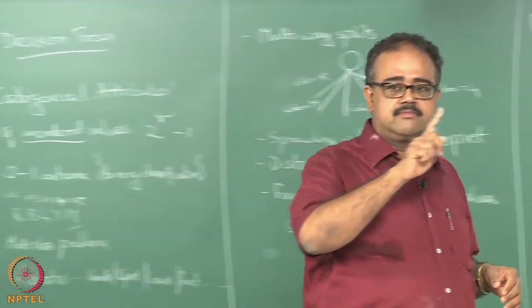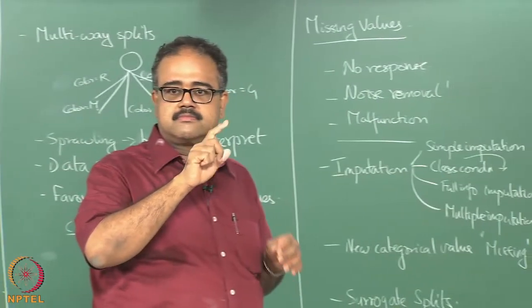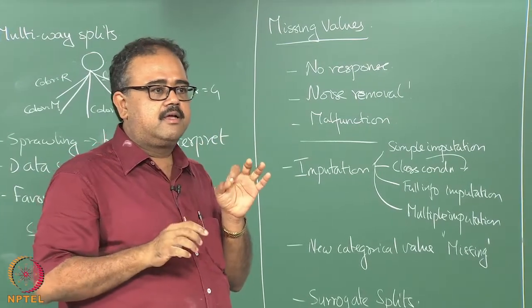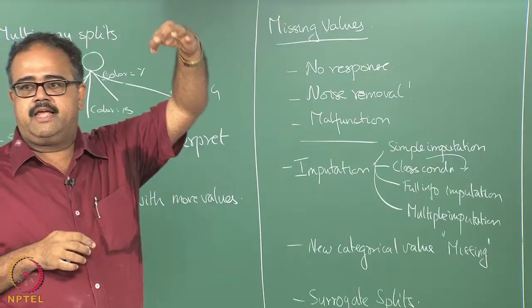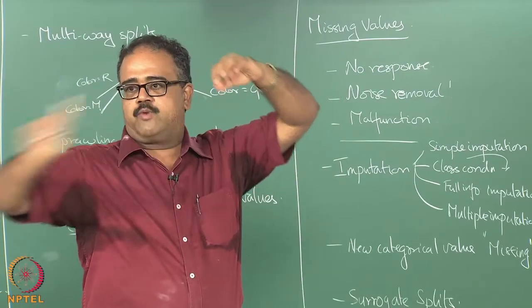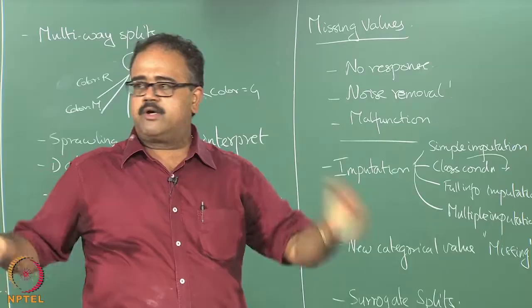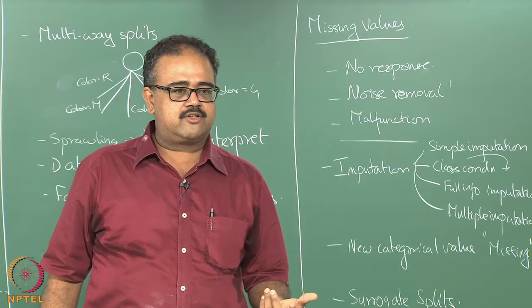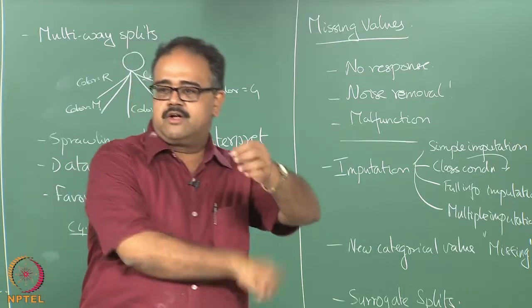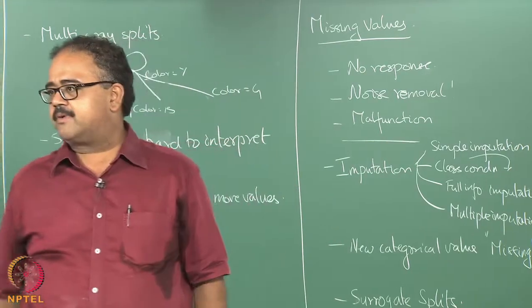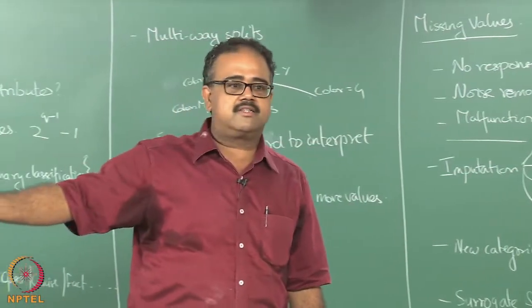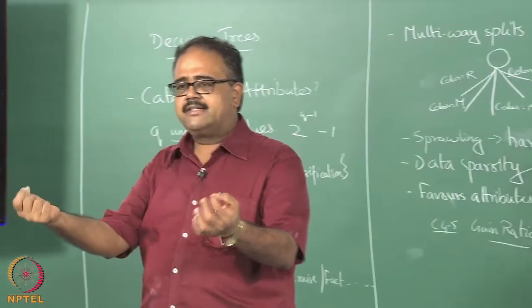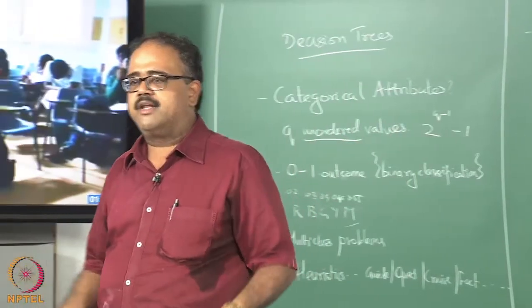Think of XOR. How will XOR look like? I will split on X1. If X1 is 0, I will go down to the left branch. X1 is 1, I will go down to the right branch. Then what do I do in the left branch? I will test on X2. If X2 is 0, I will go down one branch. X2 is 1, I will go down the other branch. Likewise I will test on X2 on the other side.